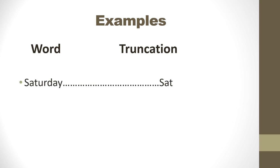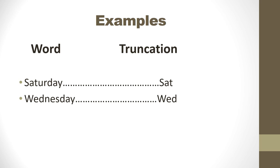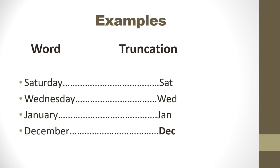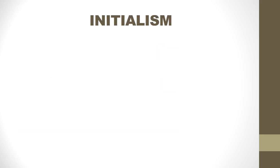On your left side there is a caption of 'word' and on your right side you have a caption of 'truncation.' The word is Saturday and its truncation is Sat. The next one, also a day of the week, is Wednesday, written under truncation as Wed. The next one is a month of the year, January, written as Jan. And December is written as Dec.